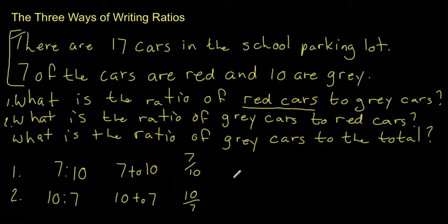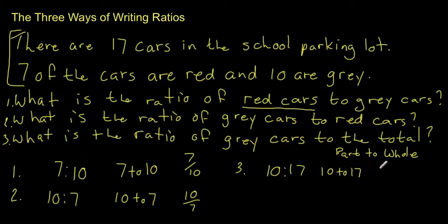Now, question number three asks, what is the ratio of gray cars to the total? Question number three is a part-to-whole ratio. These two were part-to-part ratios, but number three is a part-to-whole ratio. The gray cars are ten, ten to seventeen, because the total number of cars is seventeen. Or I can write it as ten to seventeen, or I can write it as ten over seventeen. All three of these would be correct.